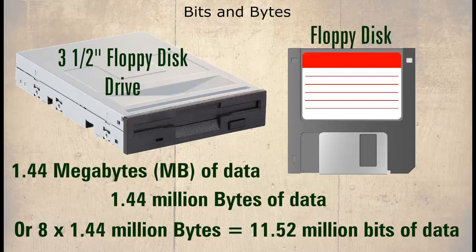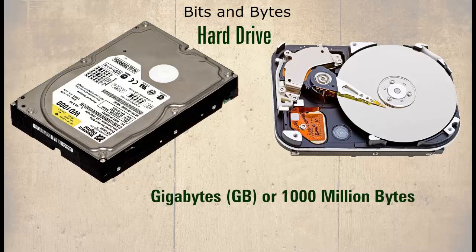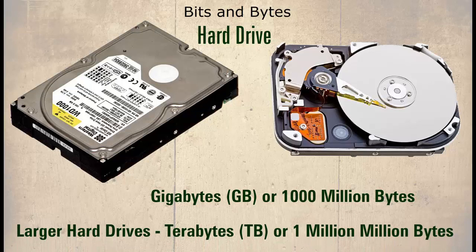Because this is still a small number relative in computer terms, we normally use bytes instead of bits when describing storage capacity. We shall learn later how floppy disks can store this information. Next is the hard drive, which has much greater capacity and is measured in gigabytes, or 100 million bytes. Larger hard drives are measured in terabytes, or 1 million million bytes.